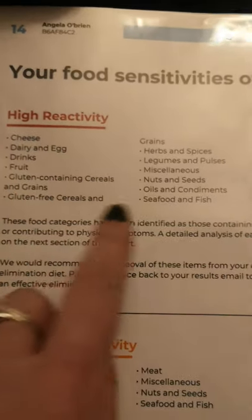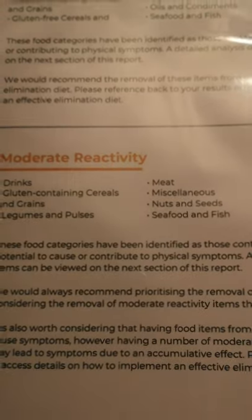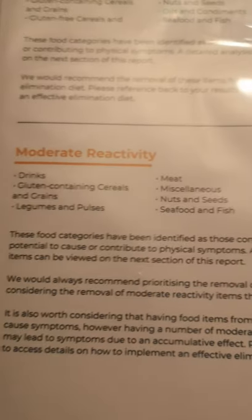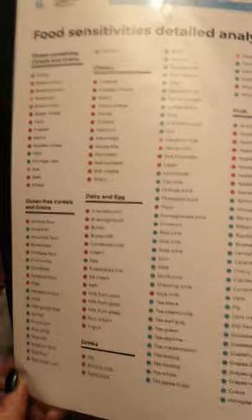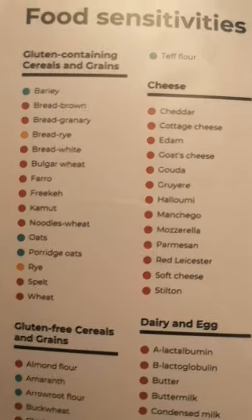It tells you how to interpret your results: red is high reactivity, moderate is moderate reactivity, and green is no reactivity. Over here starts getting to the nitty-gritty - the food sensitivity overview. High reactivity shows the categories in which I have some kind of high reactivity results, and then categories with moderate reactivity results. Then there are several pages of actual results where you can see all the red ones are to be highly avoided.